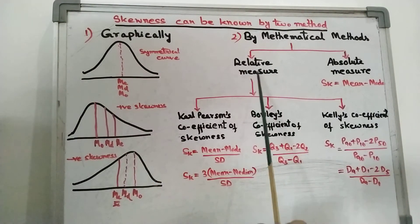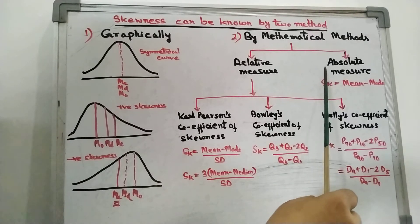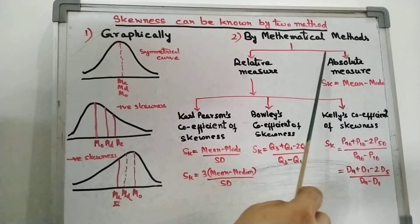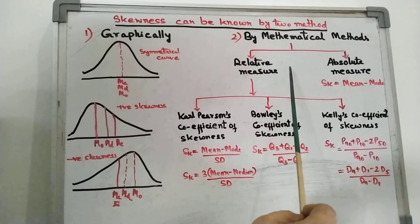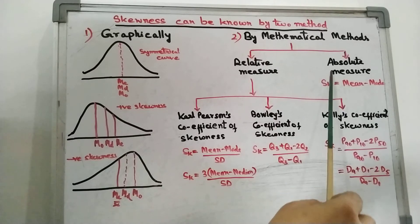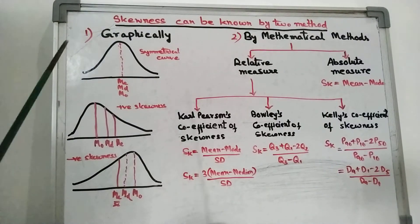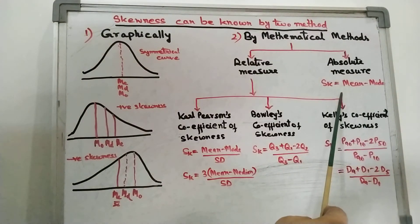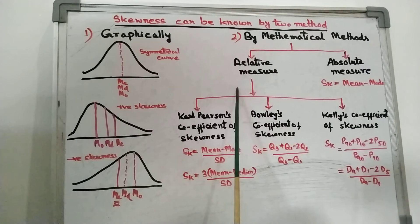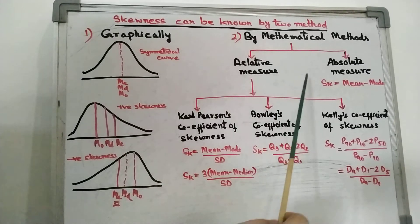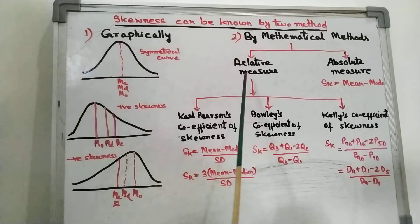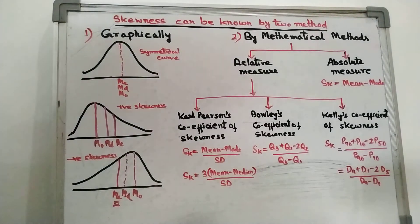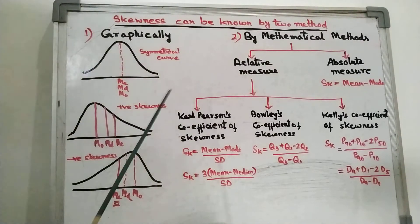Mathematical methods are of two types — one is relative measure and the other one is absolute measure. The absolute measure formula is: skewness = mean minus mode. Why do we need two kinds of measures? Absolute measure is used just if you are asked to find the skewness of a single series. But when there are two or more series with different units, we cannot use this absolute measure. In that case, we have to go for the relative measure — when we need to find skewness for comparison purpose, we need the relative measure because it is unit free.